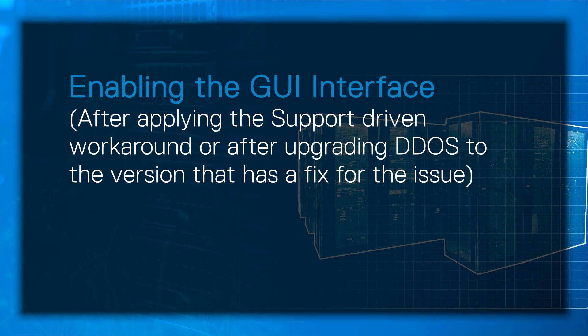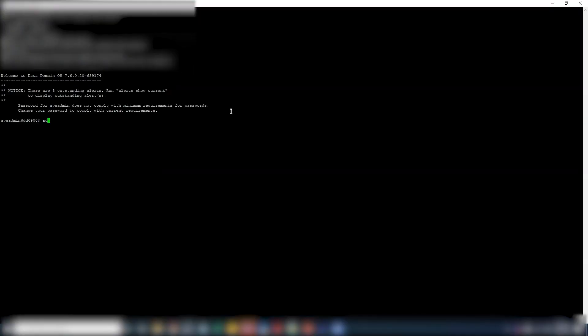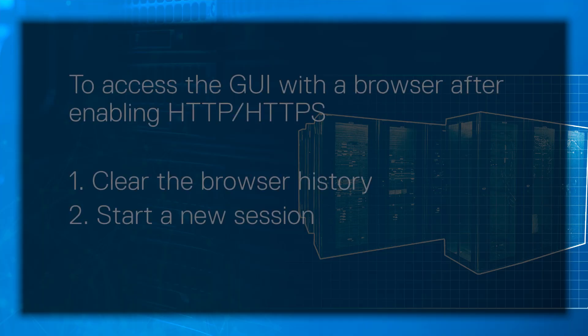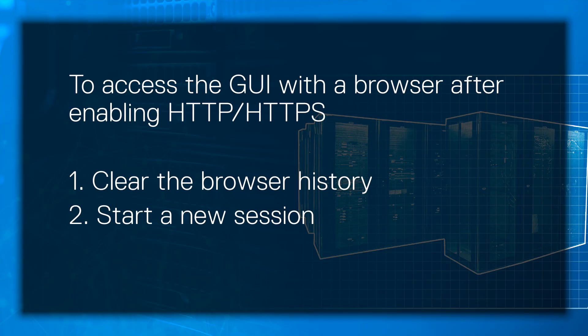The following is a demonstration for how to enable the GUI interface — that is, after applying the support-driven workaround or after upgrading the DDOS to a version that has the fix. Login to the DD via command line and use the commands 'admin access enable HTTP' and 'admin access enable HTTPS'. To access the web GUI, open your browser, clear your browser history, and start a new session.